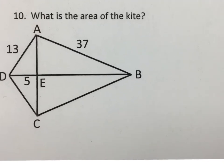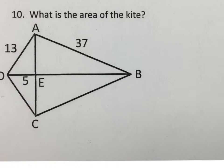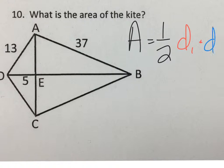When we're asked to find the area of a kite, we need to use the area of a kite formula, which is one-half the product of the diagonals, so d1 times some other diagonal d2.